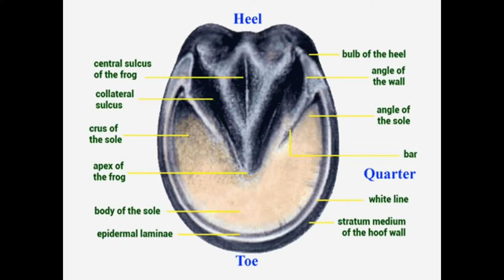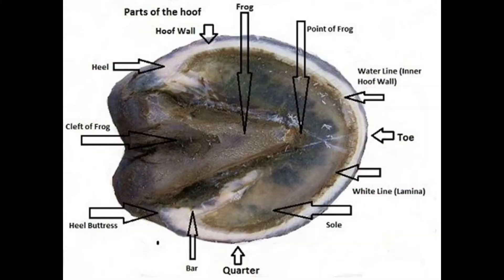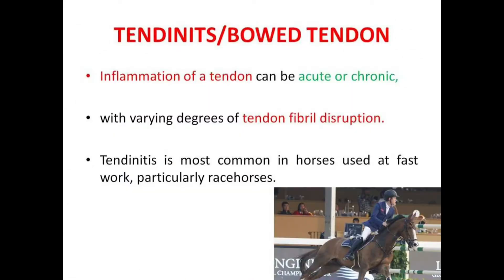This is another view from below. You can see different parts of the equine hoof with the heel, quarter, toe, frog, apex of frog, body of sole, etc. Please pause the video and look into the details. The white line is very clear in this picture. The cleft of frog, sole, heel, and hoof wall — everything is very clear here.